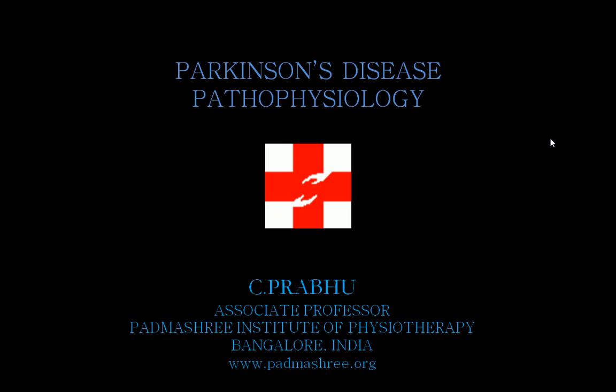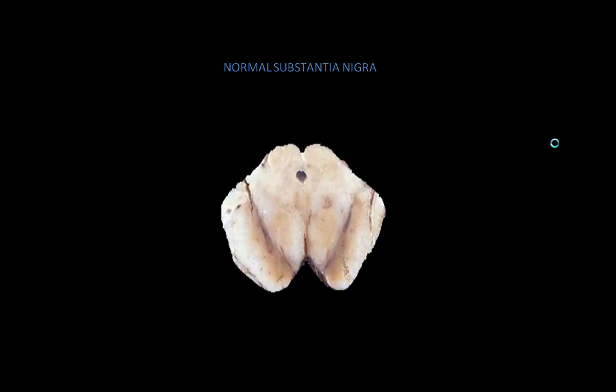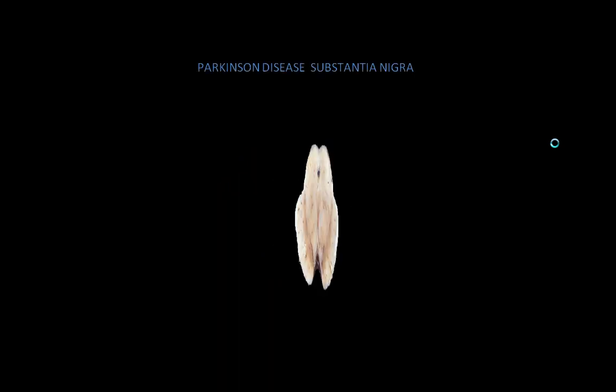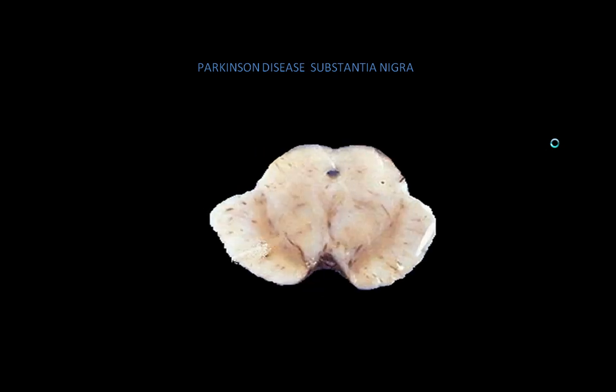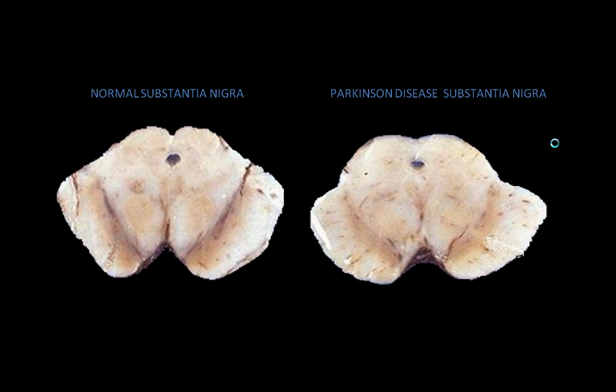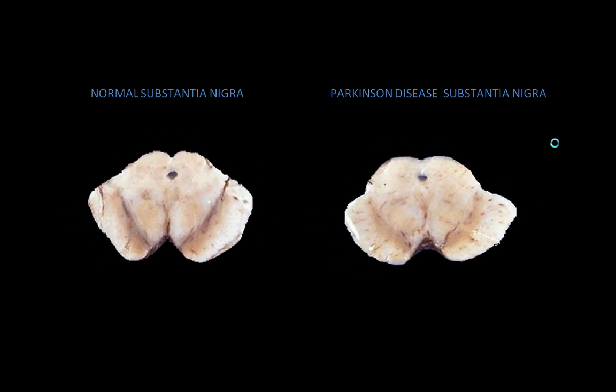This is a normal substantia nigra with a large number of dark-colored cell bodies of neurons. This is a Parkinson's disease substantia nigra with reduced dark-colored cells on both sides. This picture illustrates the comparative presence of cell bodies of the substantia nigra.